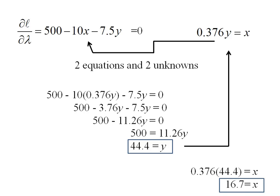So my optimal consumption bundle, given these prices and this income for this problem, is 44.4 units of y and 16.7 units of x.